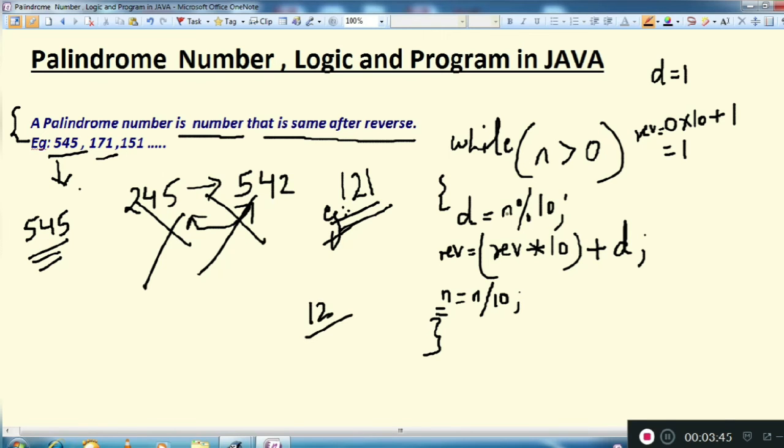So now n value is 12. Again this condition will follow n modulus 10. Now n is 12, so n modulus 10 will give you 2. Previously you have reverse value 1. So what it will give you 10 multiply 1 is 10 plus 2 equals 12.